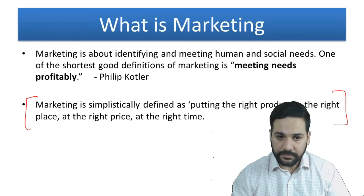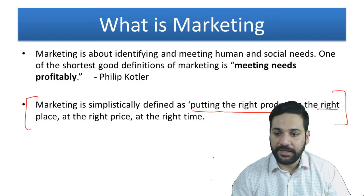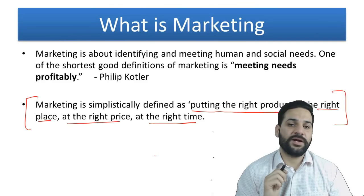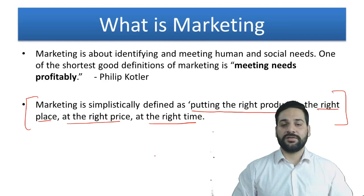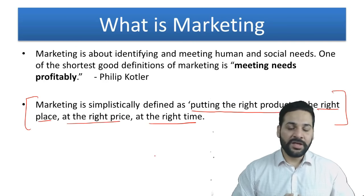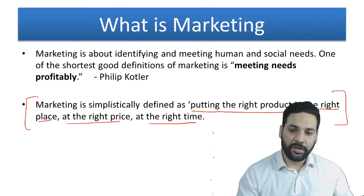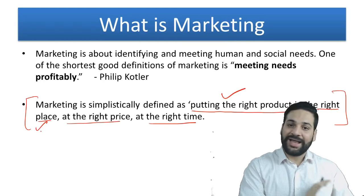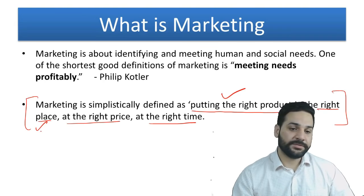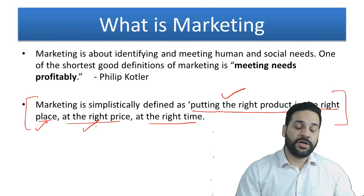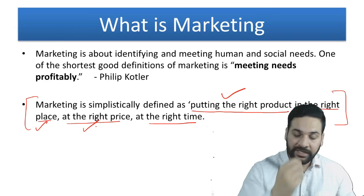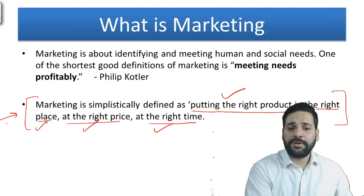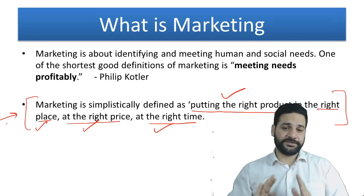The simple definition of marketing is: putting the right product in the right place at the right price and at the right time. Divide the definition into four parts. First, get information from the market and consumers about what they are looking for, and produce that product. Then provide it at the right place where they need it, at the price customers are ready to pay, and at the right time.